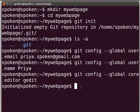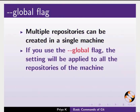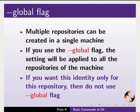We will switch back to our slides to know more about the global flag. Multiple repositories can be created in a single machine. If you use the --global flag, the setting will be applied to all the repositories in the machine. So whenever you create a new git repository, this setting will be applied by default. If you want the identity only for a particular repository, then do not use the --global flag.